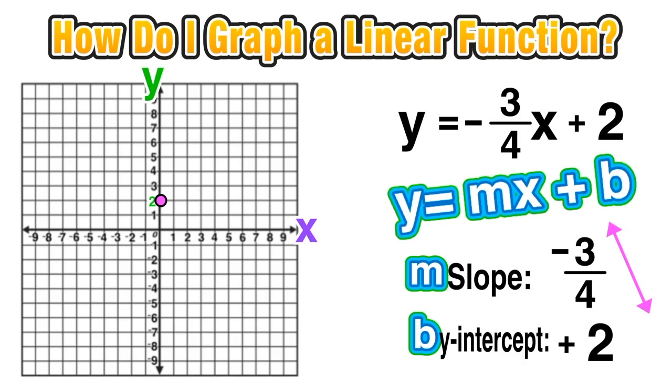When our rise is -3, think of that as rising down—we're going down 3 units on the y-axis. Then our run, our change in x, is a positive 4, so we move to the right 4 units and plot a new point. We can continue to build off of each point.